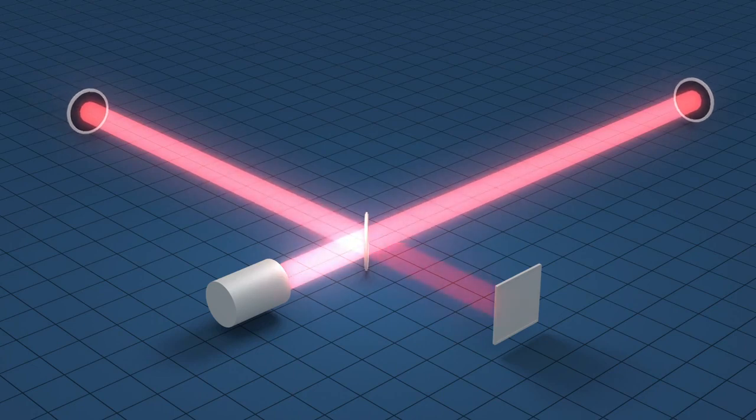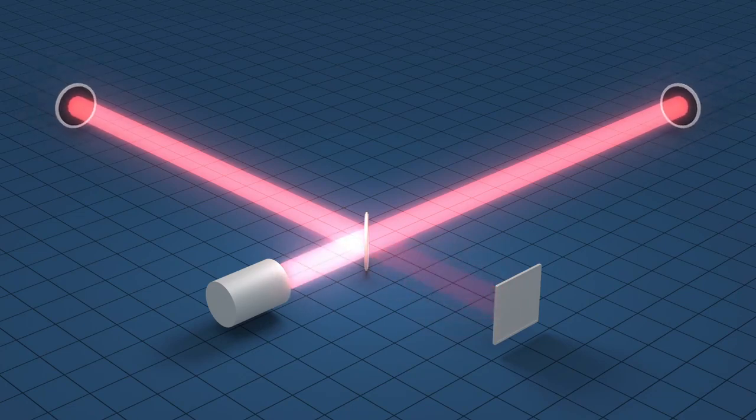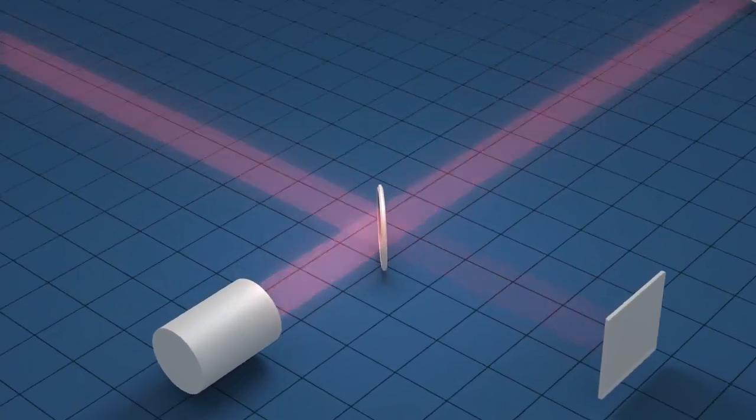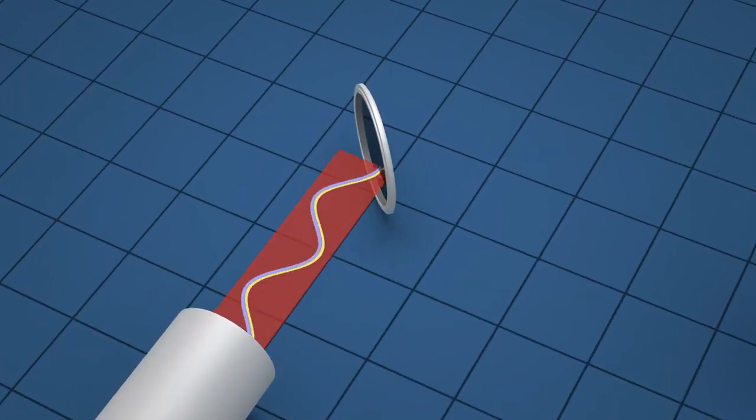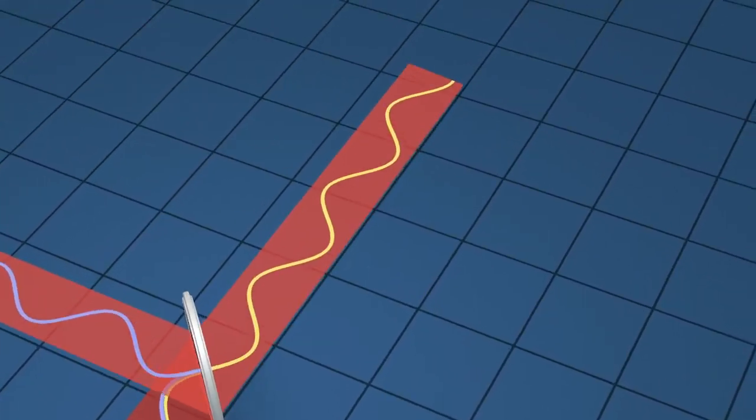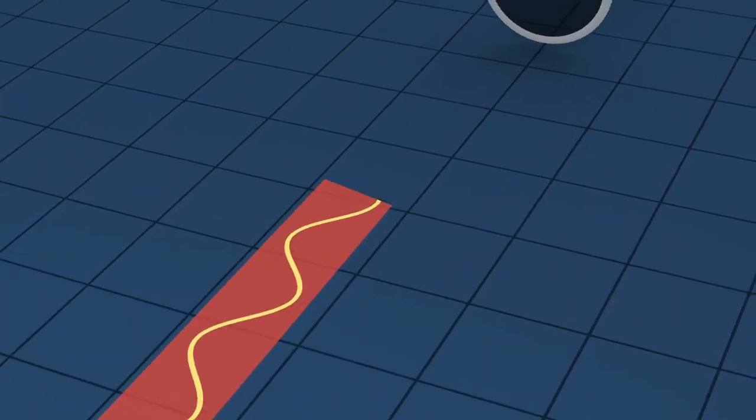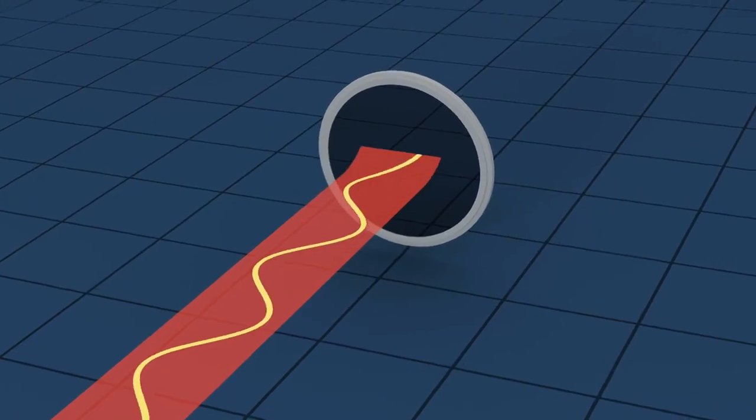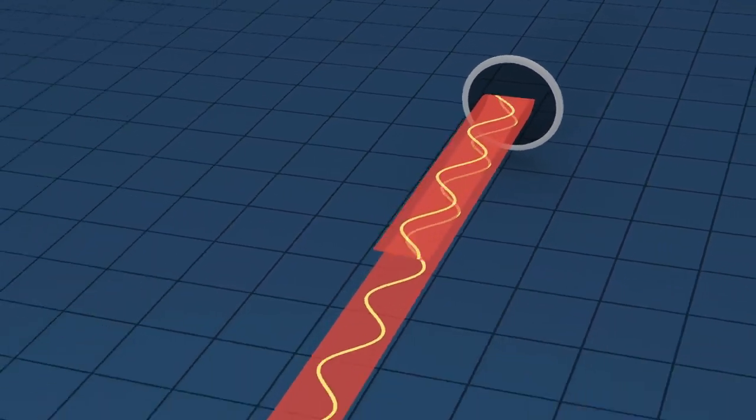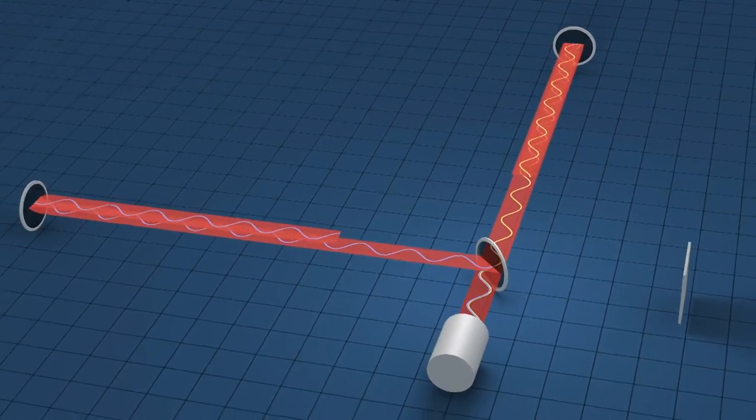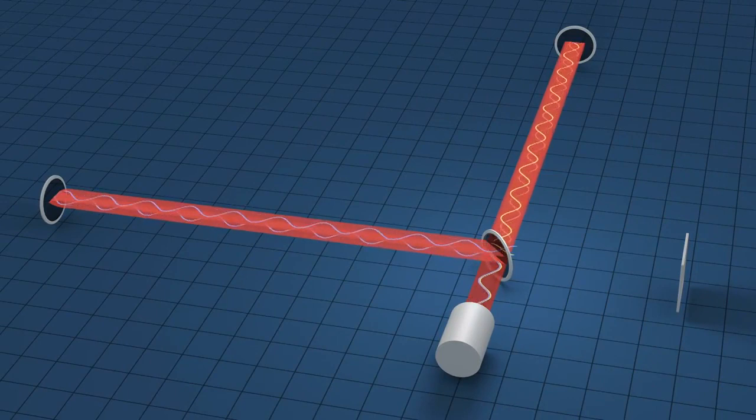LIGO uses a device known as an interferometer to measure the tiny displacements in space. In this simplified representation, a laser beam is sent towards a partially reflecting mirror and split along two paths. The beams travel along the four-kilometer arms and reflect back towards the central mirror which recombines them, directing their light to a detector.